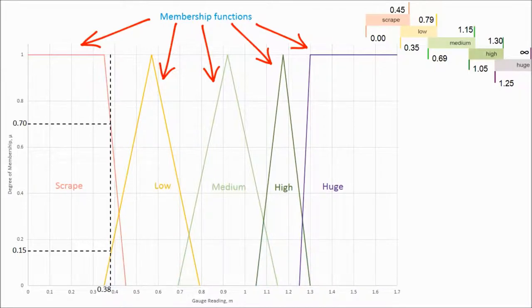Every gauge reading has a different membership degree to each category, which is the basis on which fuzzy models are built.